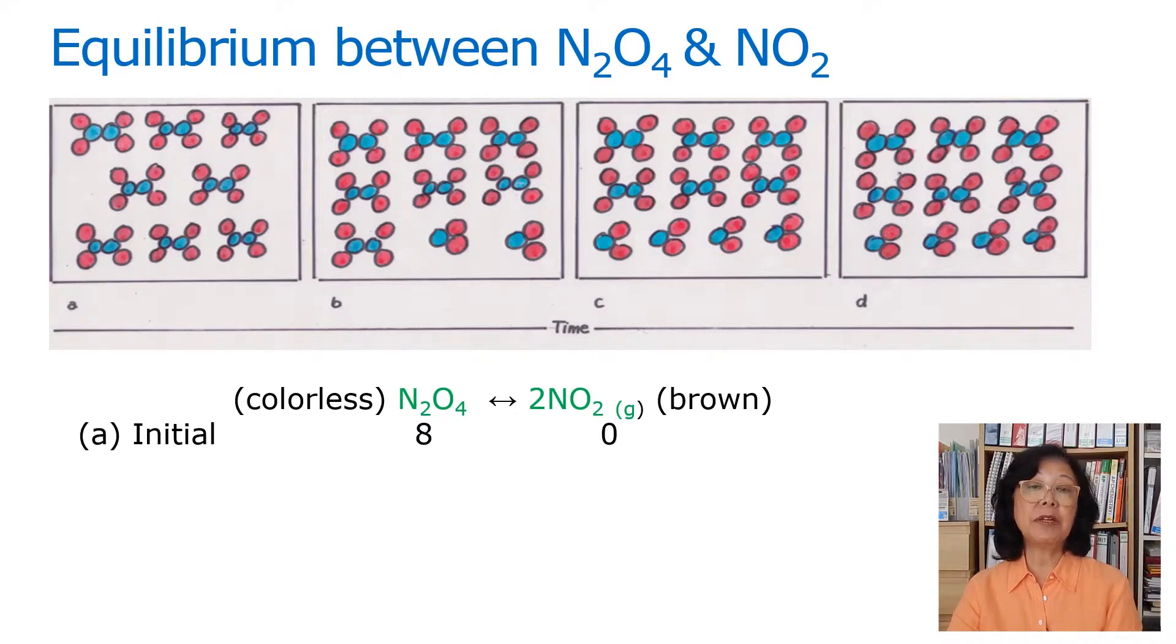We start with initially, if you look at diagram A, there are eight molecules of N2O4 and no NO2. As it changes, one mole of N2O4 is converted into two moles of NO2. We come to seven versus two molecules as depicted by diagram B.